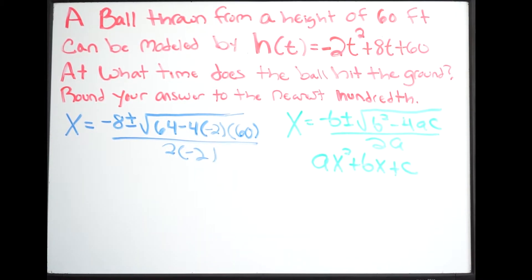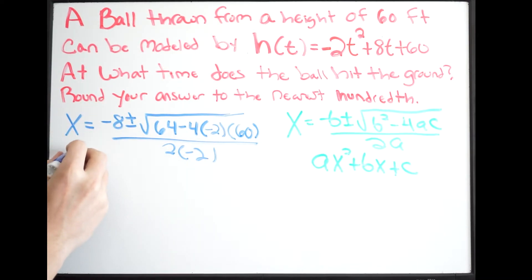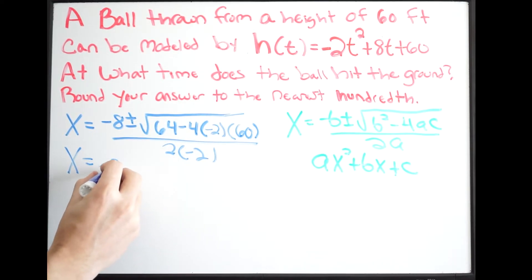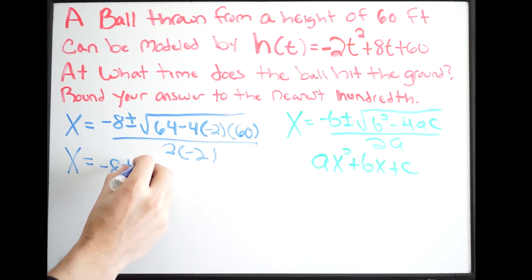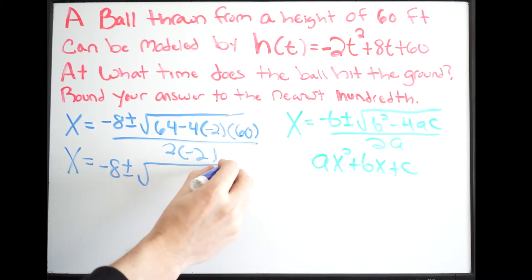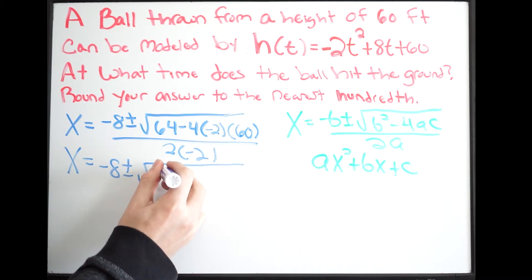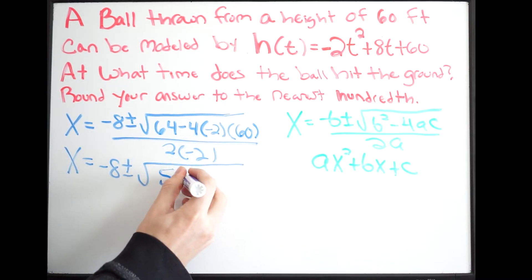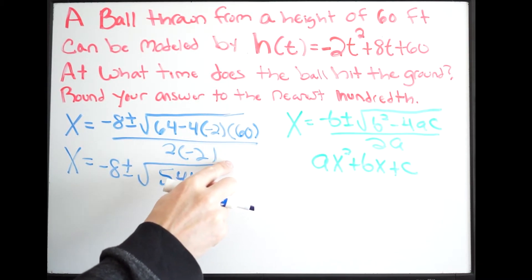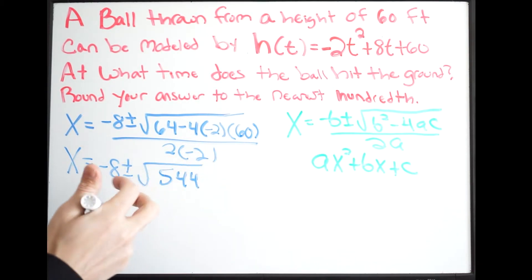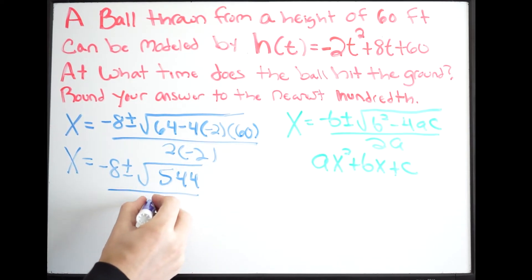Let's go ahead and clean up what we have underneath our square root. We get x equals negative 8 plus or minus the square root of — plugging this into our calculator — we get 544, all over negative 4.